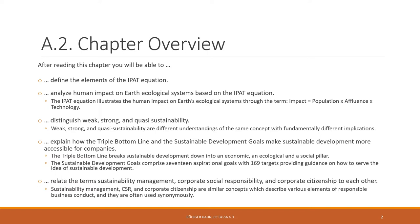The second factor is the level of affluence — so how much do we want and how much do we consume? And third, the technology — that is, the means by which we consume. So what is the technology behind that?